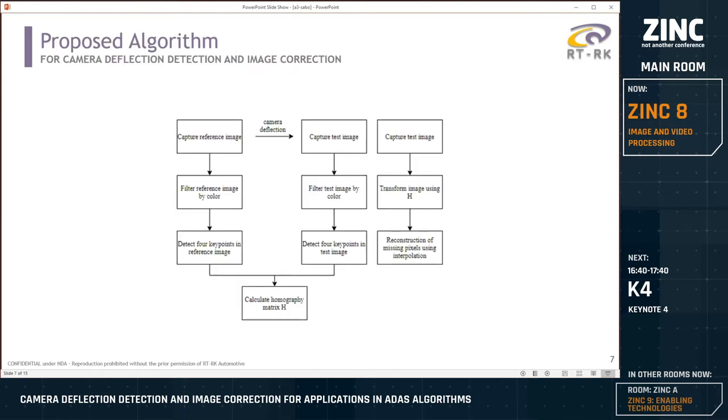Proposed solution can be divided into two parts as can be seen on this diagram. In the first part, reference and test images are captured. Those images were filtered by color so that the four key points in the reference and test image could be detected and the whole process was done so that the homography matrix could be calculated.